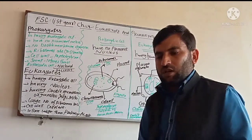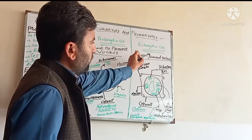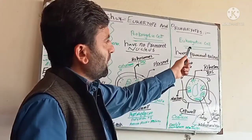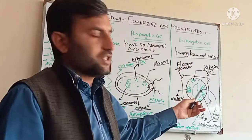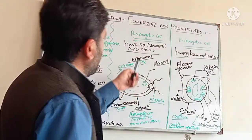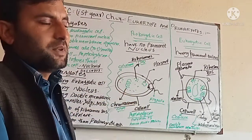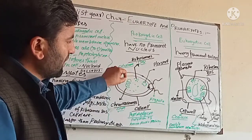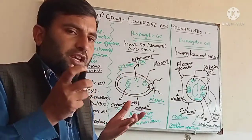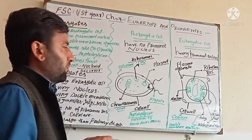To start this topic with the help of a diagram. You can see here the Eukaryotic cell, and you can see here the Prokaryotic cell. The Eukaryotic cell has a prominent nucleus you can see easily in the diagram, but the Prokaryotic cell has no nucleus. Their cytoplasm contains some amount of DNA and chromosomes. So I will tell you the details of Eukaryotes and Prokaryotes.